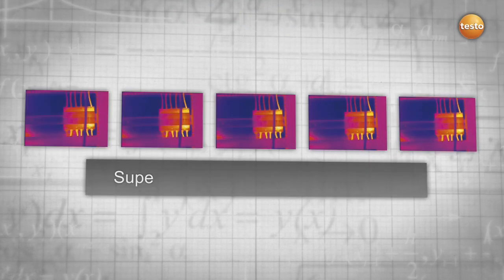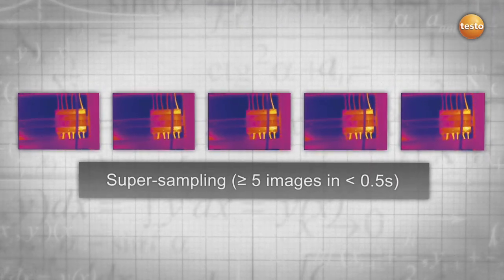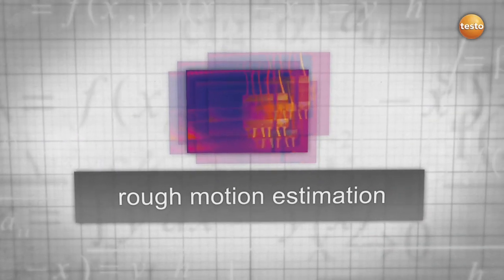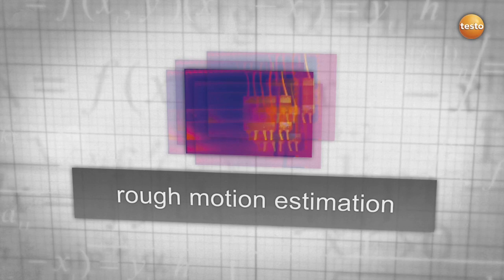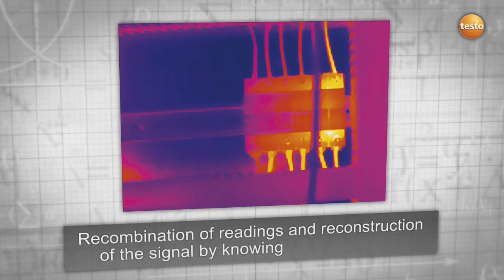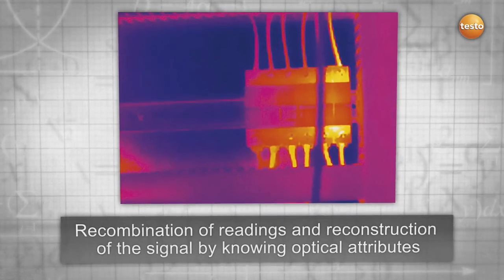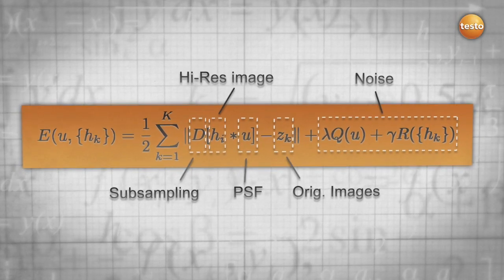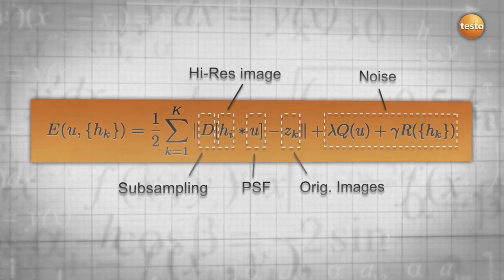The technology works as follows. The thermal imager takes multiple images in less than 0.5 seconds. They are combined in one high-resolution image, uniting the technologies of supersampling and deconvolution. This process is reflected in the formula that was exclusively developed for the Testo super-resolution technology.